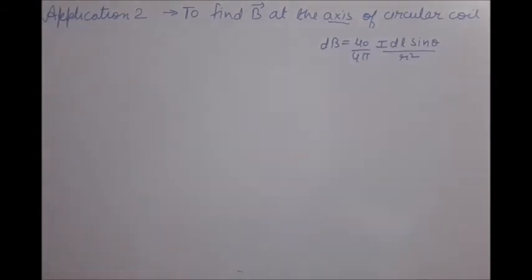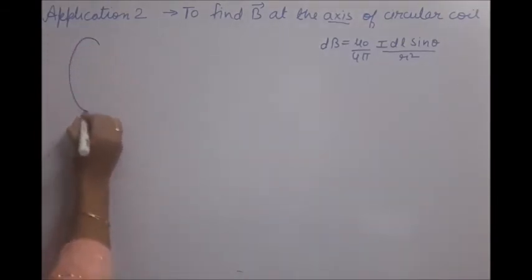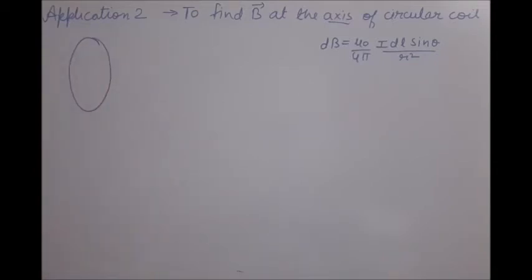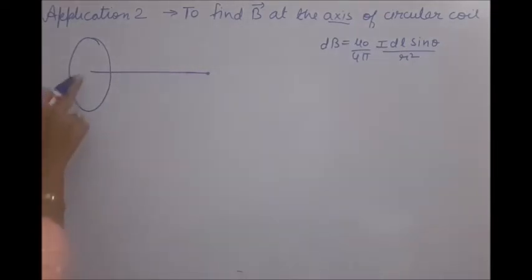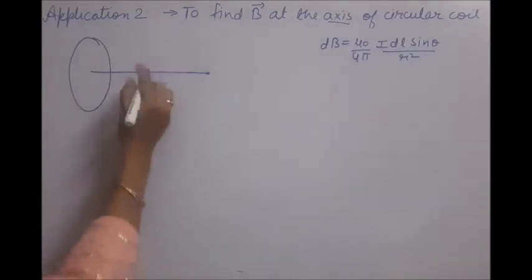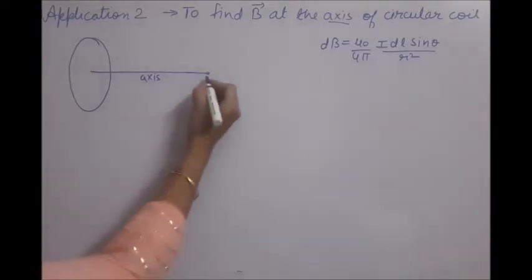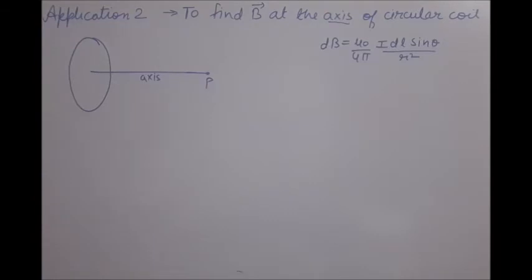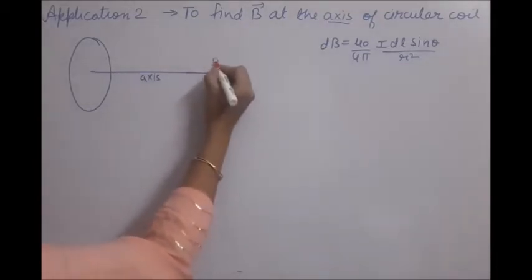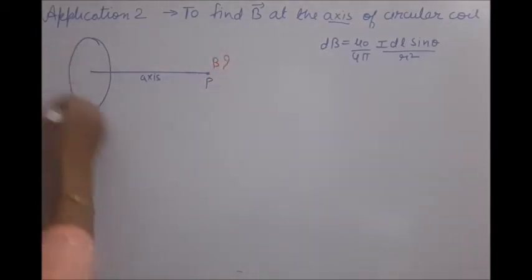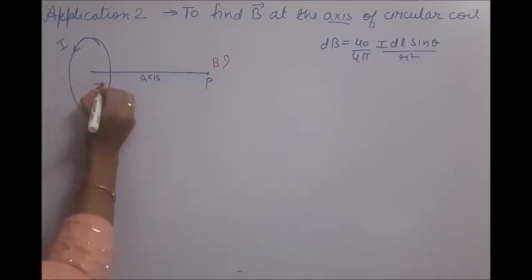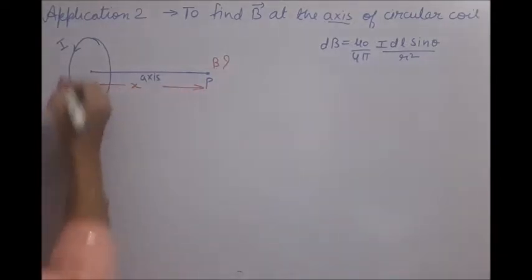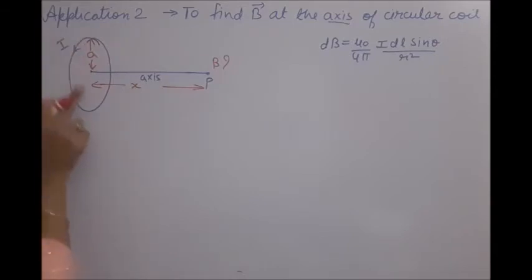We need the side view of the coil. This is the side view of a circular coil — it looks oval in shape because we are seeing it from the side. The line passing through its center and perpendicular to its plane is the axis. At some point P on this axis we have to find the magnetic field B, due to the current I flowing in the coil. The distance from the center to point P is x, and the radius of the coil is a. By Pythagoras theorem, the distance from the coil element to P is R = √(a² + x²).